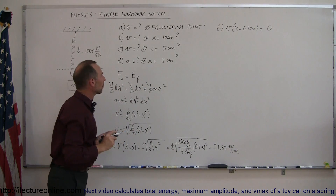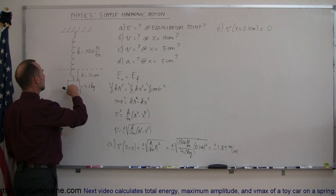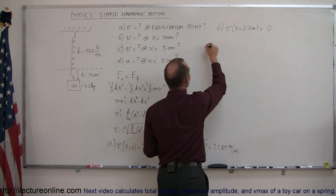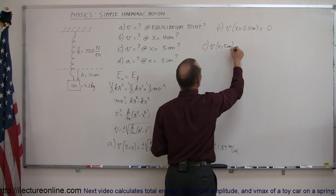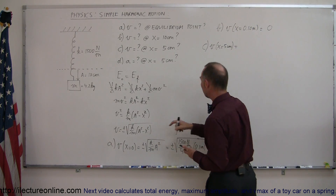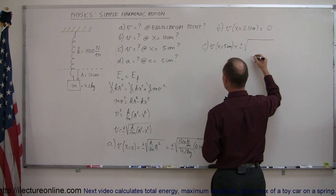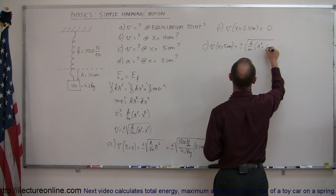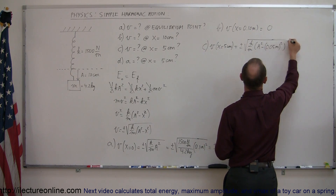For part c, we want the velocity when x = 5 cm — the halfway point between equilibrium and maximum displacement. Velocity at x = 5 cm equals plus or minus the square root of (k/m) times (a² − x²), where x = 0.05 m.